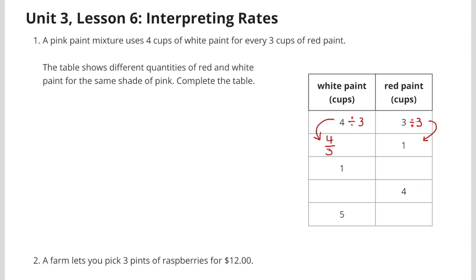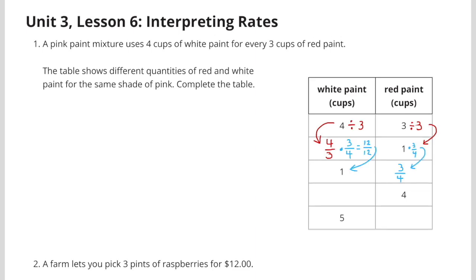Well, I've divided the 3 cups of red paint by 3 to get that 1. And if I did that, I needed to divide the 4 by 3, which gave me 4 thirds. So for every 1 cup of red paint, I would have 4 thirds cups of white paint. In order to turn the 4 thirds into 1 cup of white paint, I would have to multiply it by its reciprocal, which would be 3 fourths. So 4 thirds times 3 fourths equals 12 twelfths. 12 twelfths equals 1. So 1 cup of white paint.